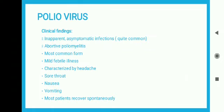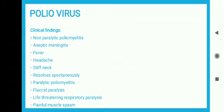There are several clinical forms of poliomyelitis. Some are asymptomatic infections that are inapparent and quite common. The most common form is abortive poliomyelitis, a mild febrile illness characterized by headache, vomiting, nausea, and sore throat — most patients recover spontaneously. The third form is non-paralytic poliomyelitis, with symptoms of aseptic meningitis, fever, headaches, and stiff neck, which also resolves spontaneously.